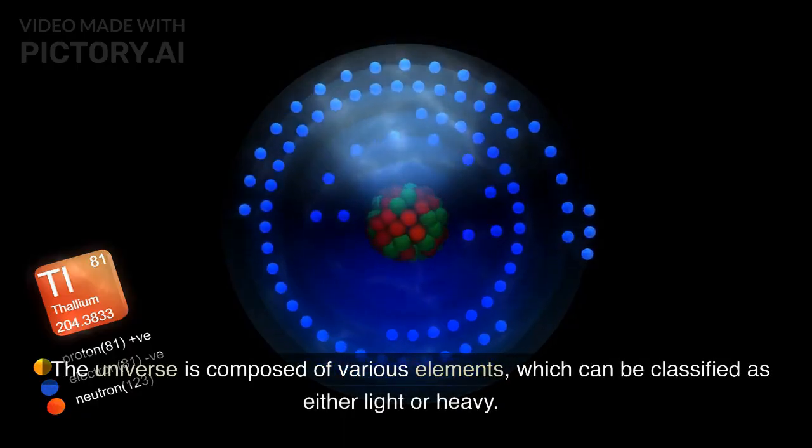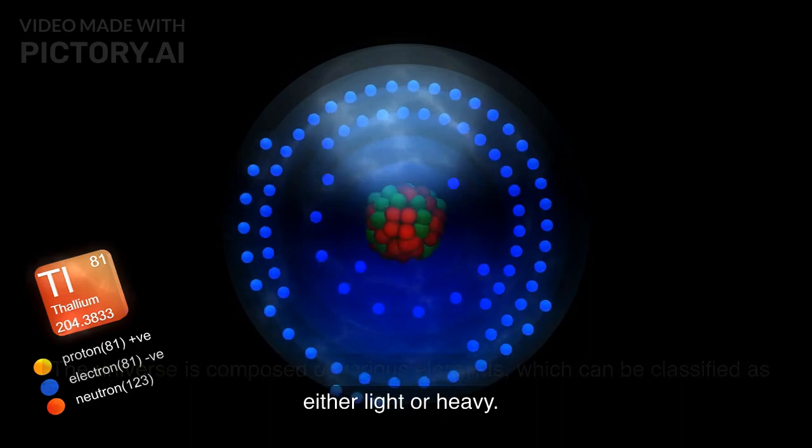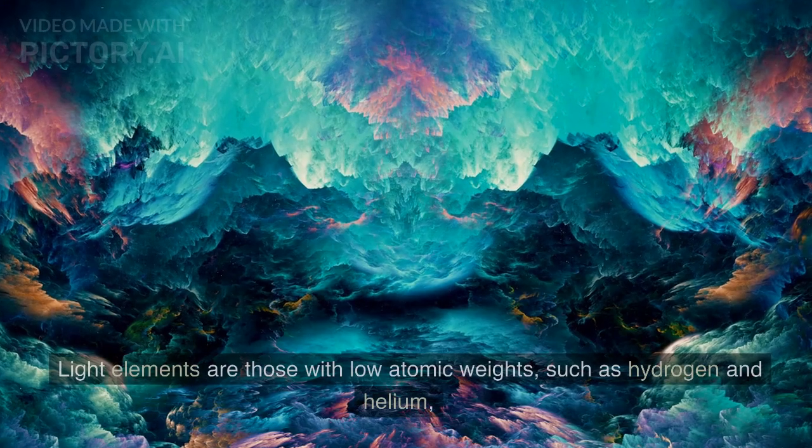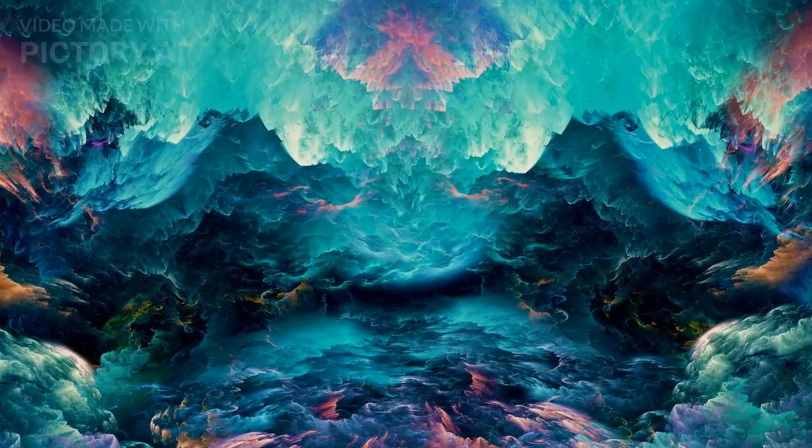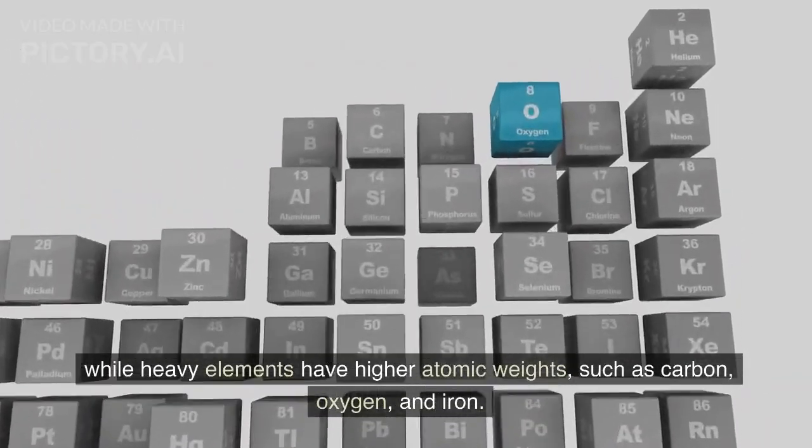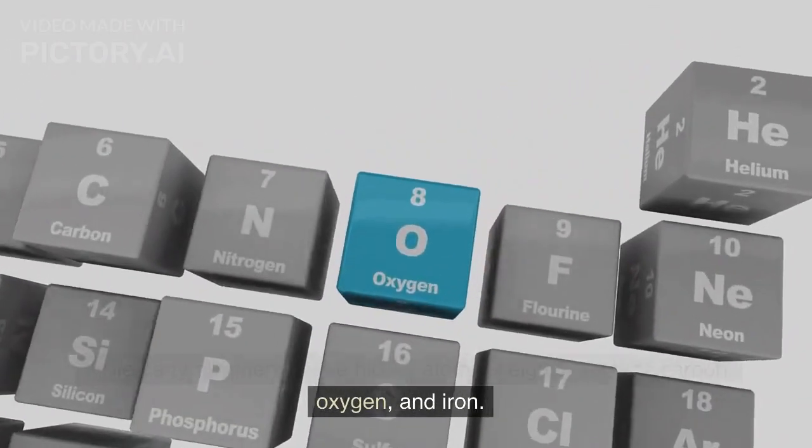The universe is composed of various elements, which can be classified as either light or heavy. Light elements are those with low atomic weights, such as hydrogen and helium, while heavy elements have higher atomic weights, such as carbon, oxygen, and iron.